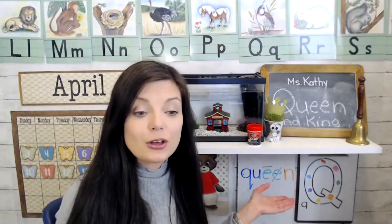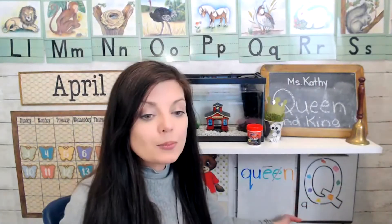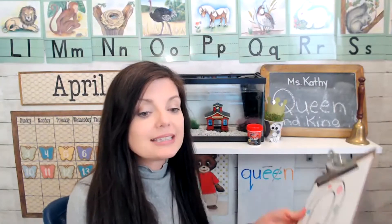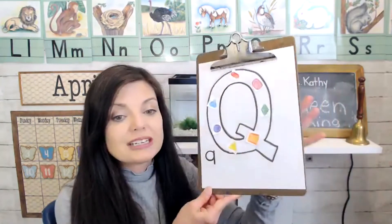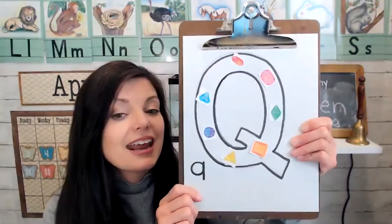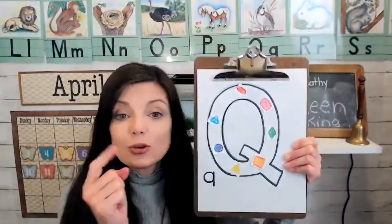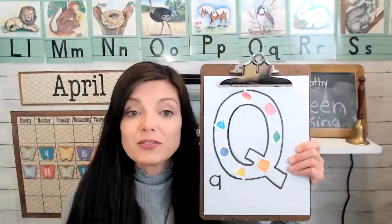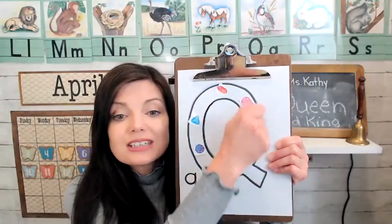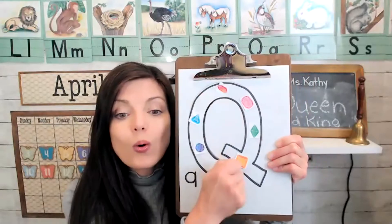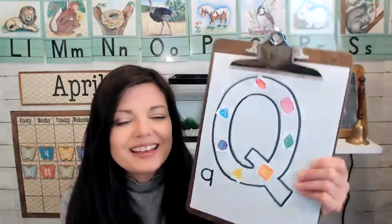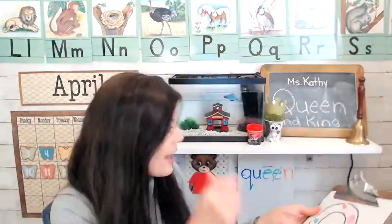First, you can decorate the letter Q with some jewels. On the weekly lesson plan and worksheets, I have some paper jewels that you can cut out and glue on, or maybe you have some craft jewels. Or if you don't have any of that, you could just color the whole letter Q yellow, like gold.